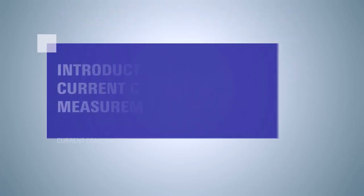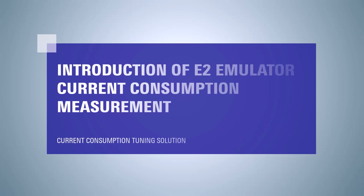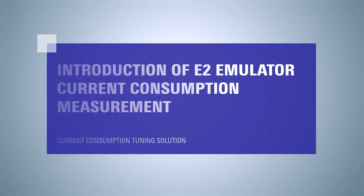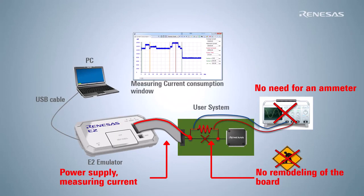This video demonstrates how to perform current consumption measurements with the E2 emulator. The E2 emulator measures the current supplied to the user system. Hence, there is no need for modifications such as pattern cutting or insertion of shunt resistors on the user system board.